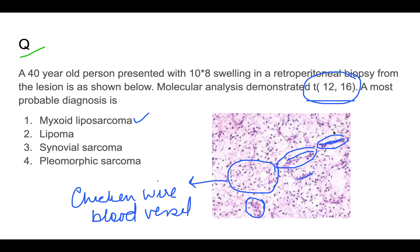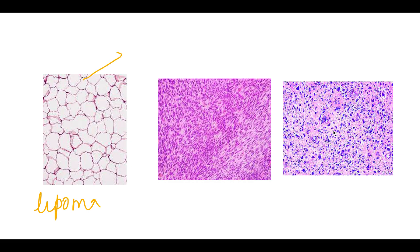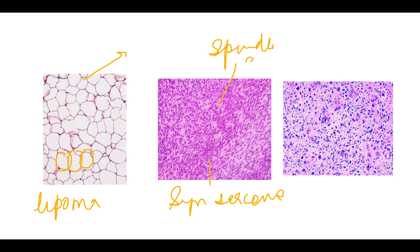For comparison: lipoma shows only adipocytes with no hypercellularity or spindle cells. Synovial sarcoma shows spindle cells. Pleomorphic sarcoma shows large bizarre-looking nuclei with pleomorphism. For these histology questions, reviewing Robbins pathology is recommended to become familiar with these patterns.